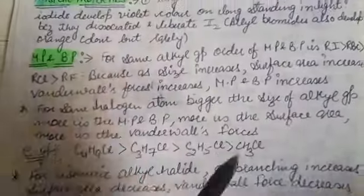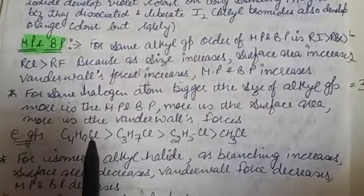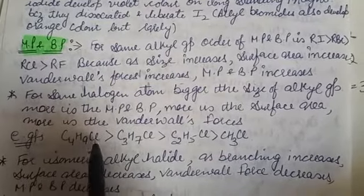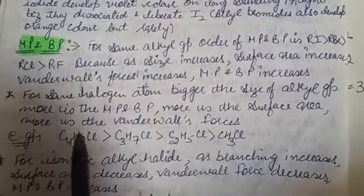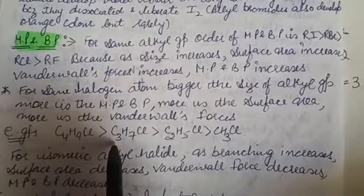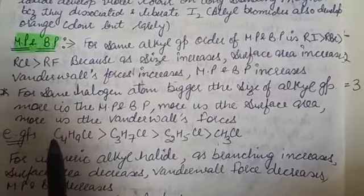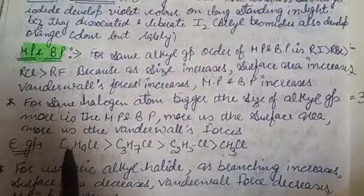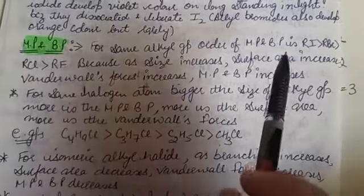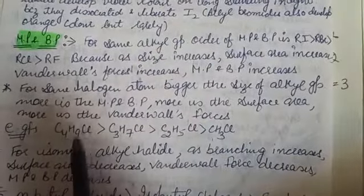If the halogen is the same, the melting and boiling point will depend on the size of the alkyl group. For example, with chlorine as the halogen, if the alkyl group has 4 carbons versus 3, 2, or 1 carbon, the larger the alkyl group, the greater the surface area, and therefore the higher the boiling point.